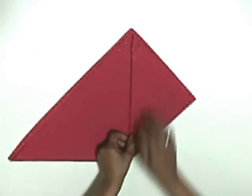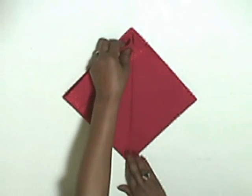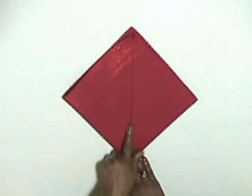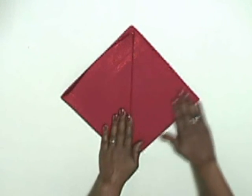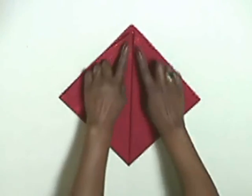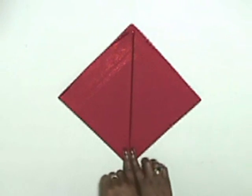Fold the left and right hand sides of the triangle up to the point so they meet in the middle, pressing along the folds so now you have a diamond shape.